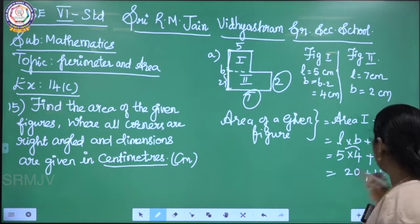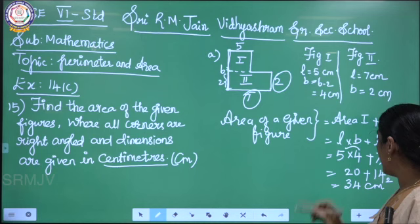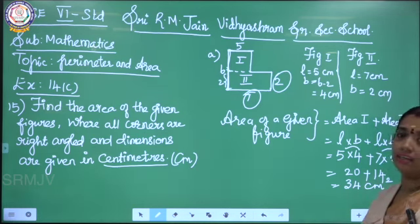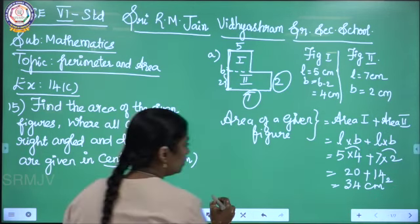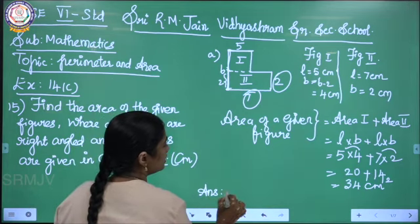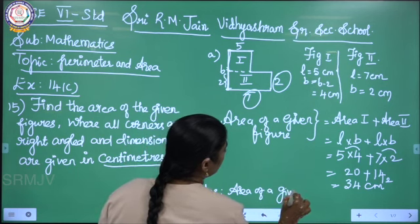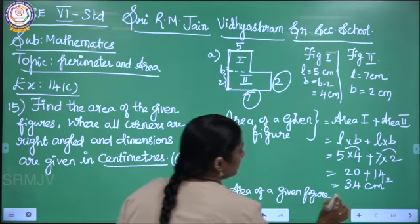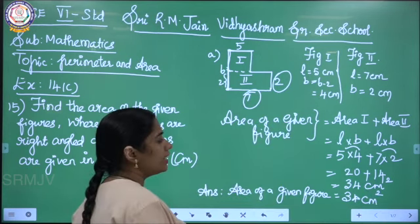So the answer is 20 plus 14, which is 34. 34 centimeter square. If the area means the unit should be centimeter square. Area means the unit should be centimeter square. The area of the given figure is equal to 34 centimeter square.